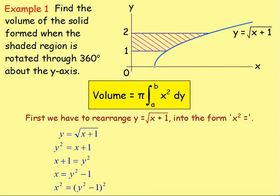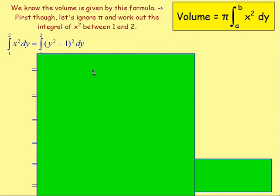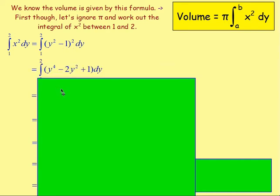The same as last lesson, what I would do is rather than put pi times the integral of the y-squared take away 1 all squared in here, ignore pi just now and just work out the integral of whatever the x-squared is. So if we do that, we're going to have the integral of y-squared take away 1 all squared between 2 and 1. And again, because it's just squared, what you'd probably do is just multiply out the bracket. So imagine it as y-squared take away 1 bracket y-squared take away 1. If you multiply that out, you get y to the power of 4 take away 2y-squared plus 1.